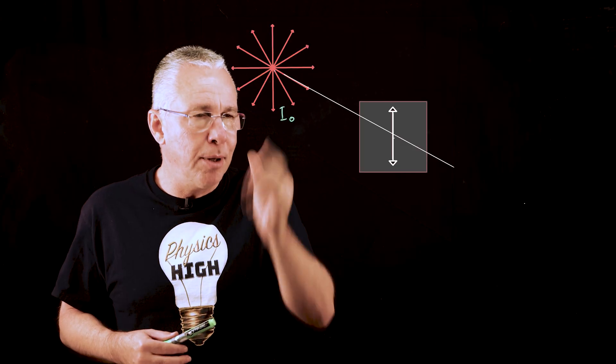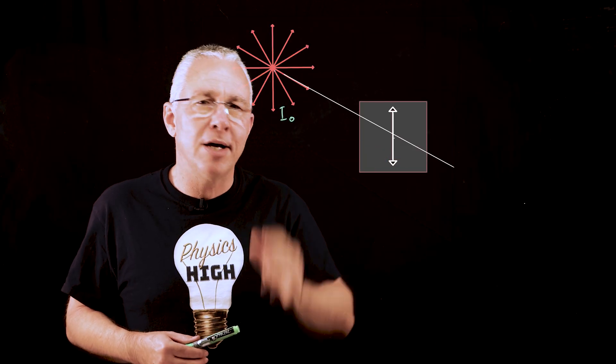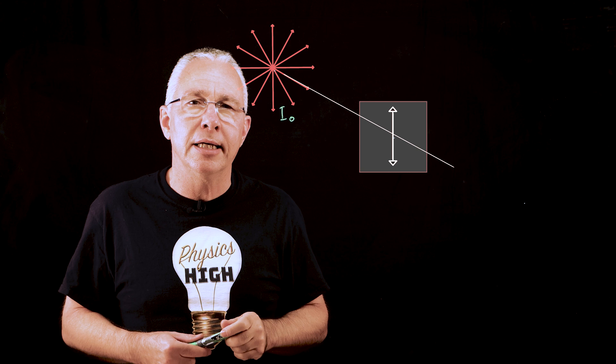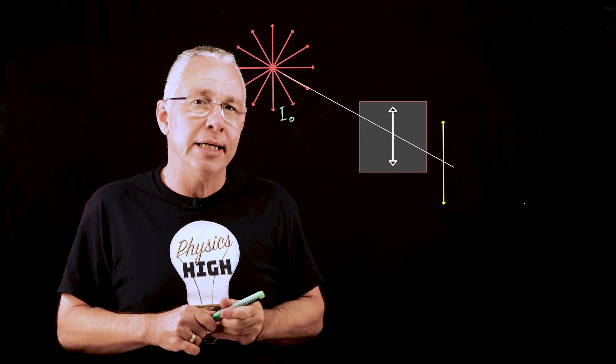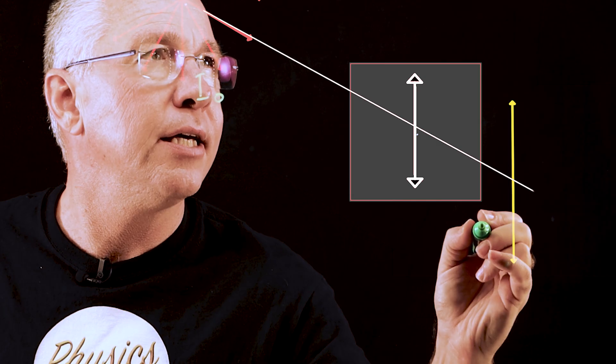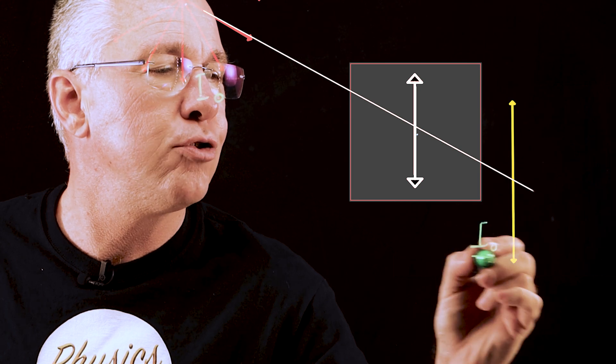As a result passing unpolarized light through a polarizing filter that is vertically aligned the intensity that comes out is half of the original intensity and so is I naught over two.